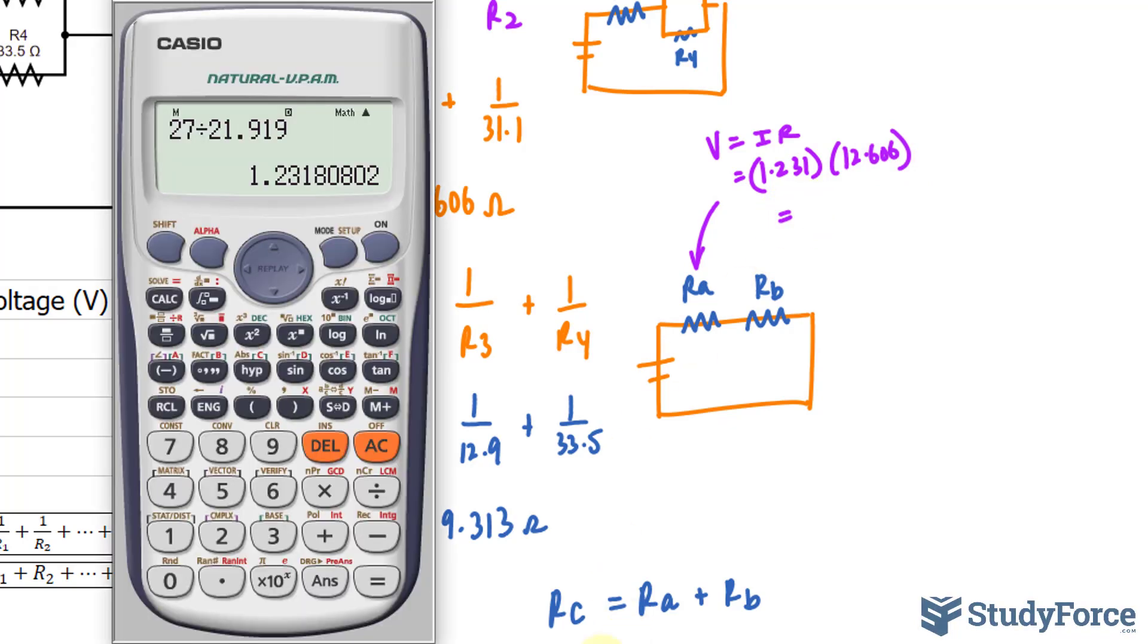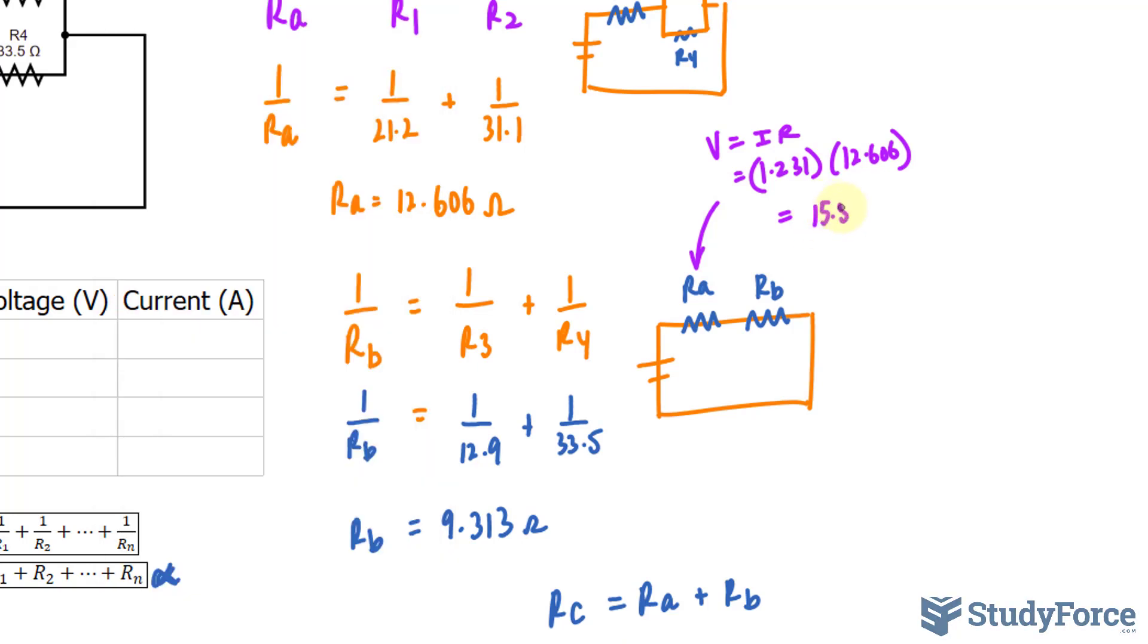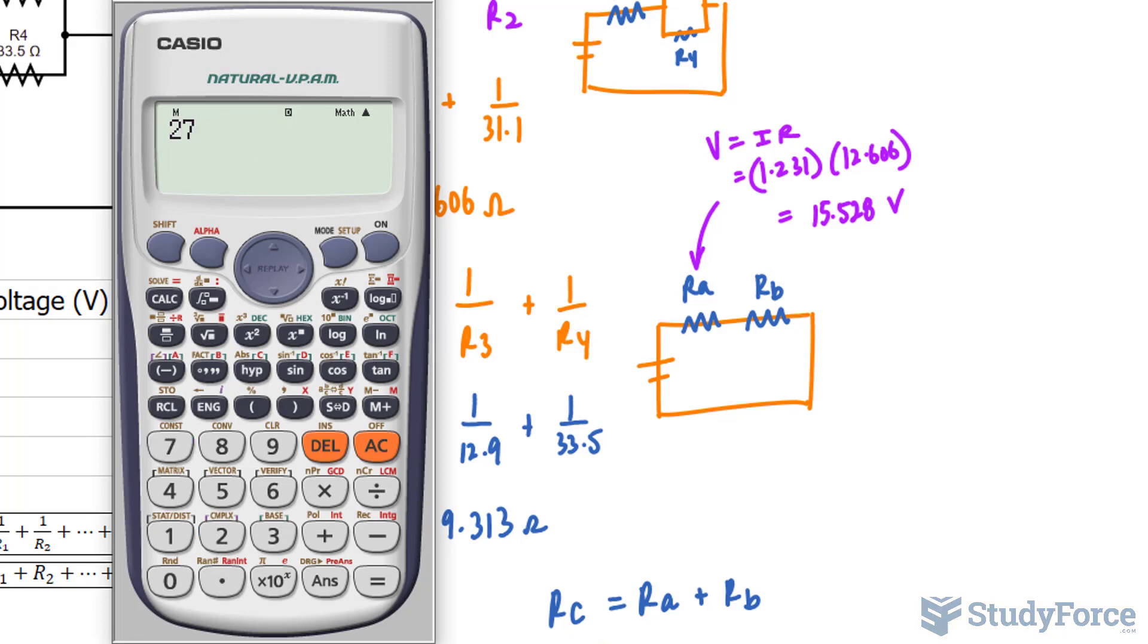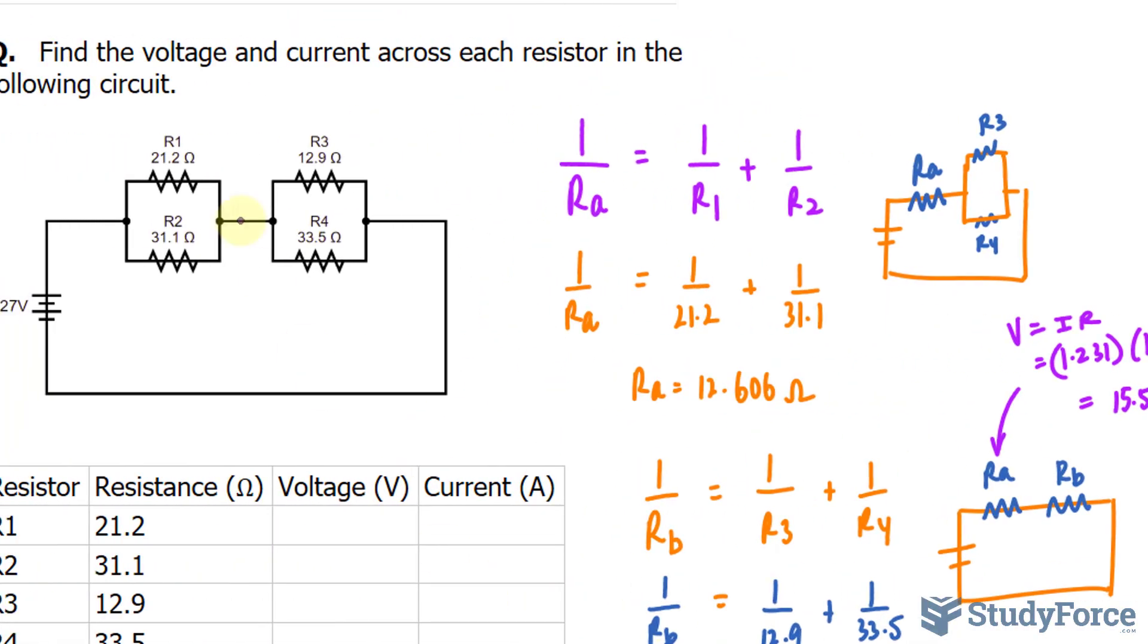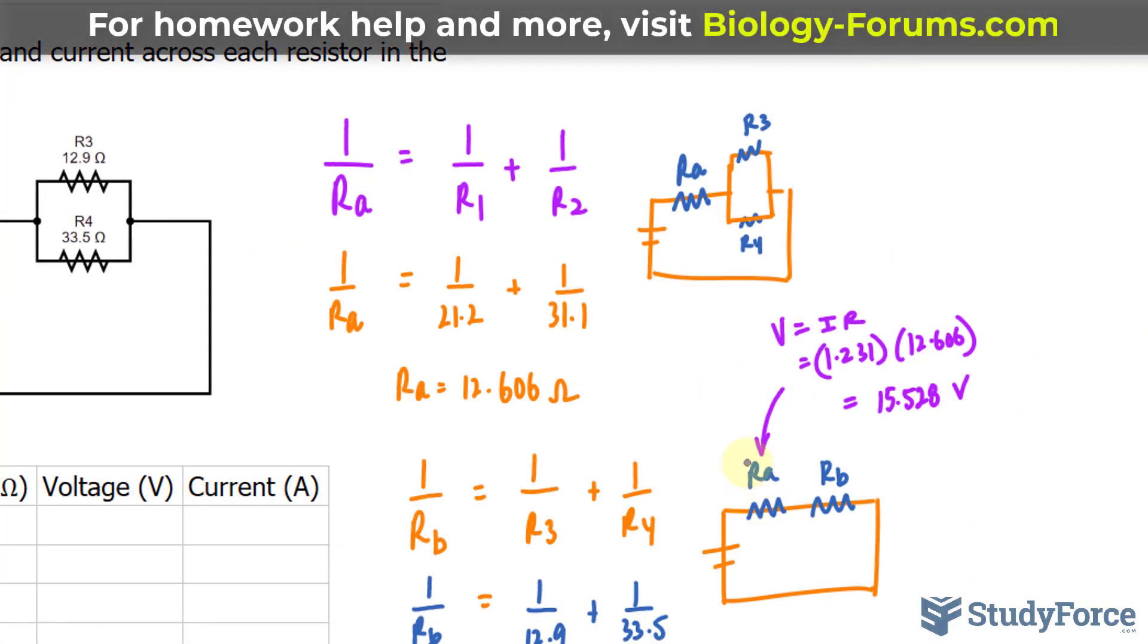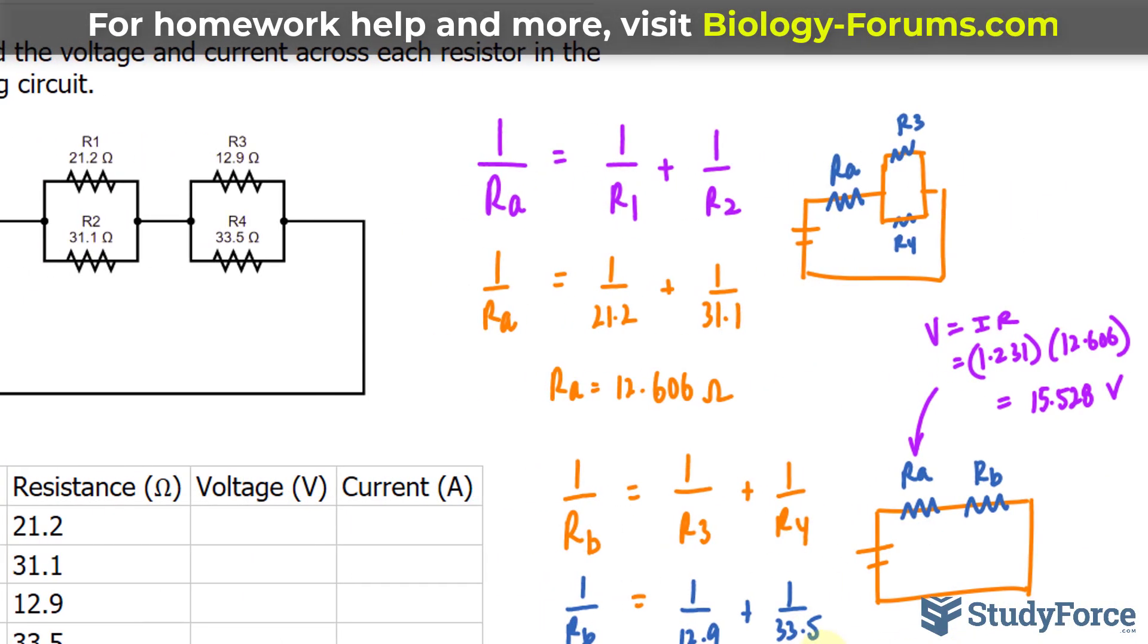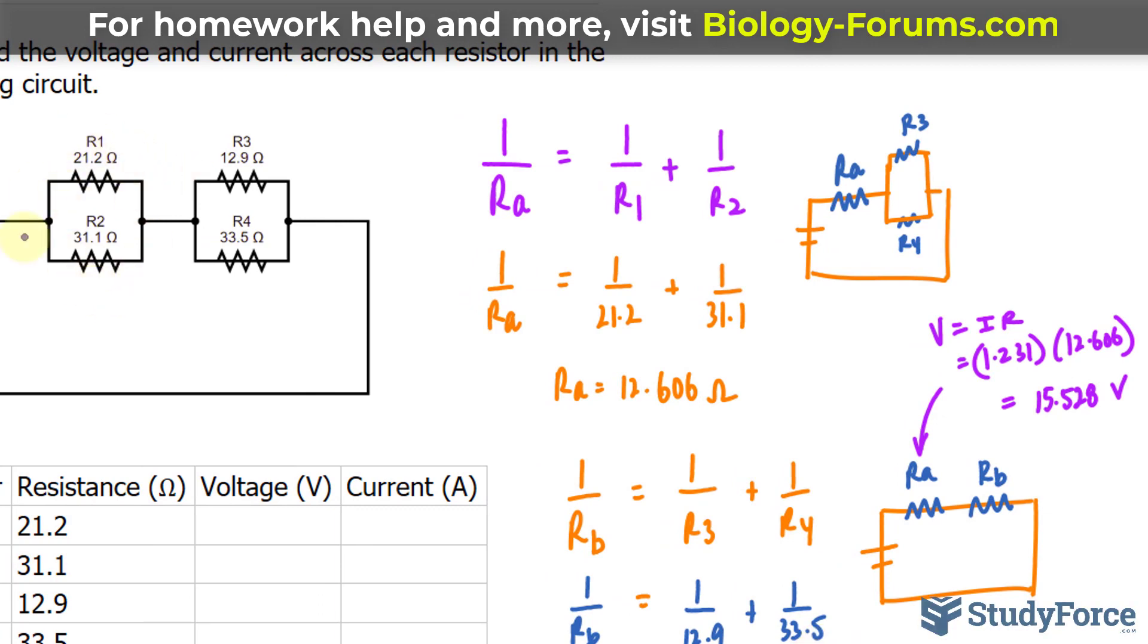And I'll explain why that's important in a moment. So the value on our screen times 12.606 makes 15.528. 15.528 is the voltage at RA. Remember, the voltage at the power source was 27, and the voltage reading at RA is 15.528. That means there's a drop of roughly 11.471 volts after passing through this part of the circuit. Also keep in mind that RA consists of R1 and R2. The voltage reading across these two combined is 15.528.